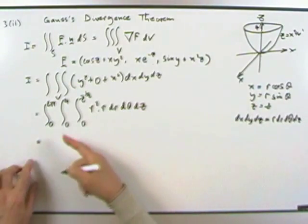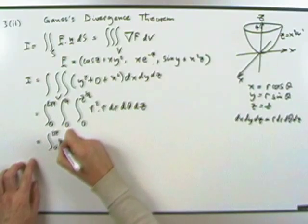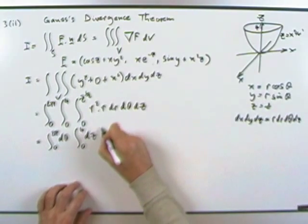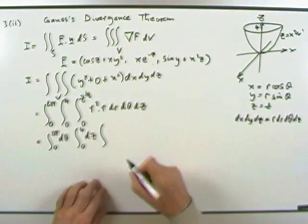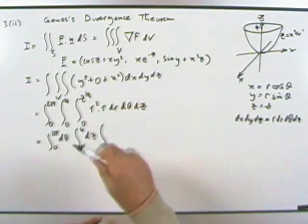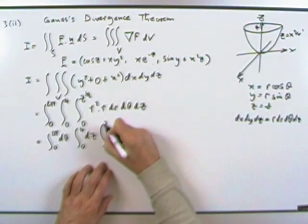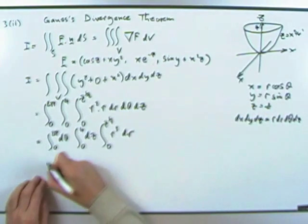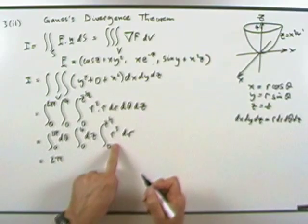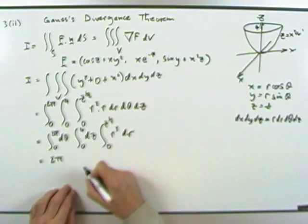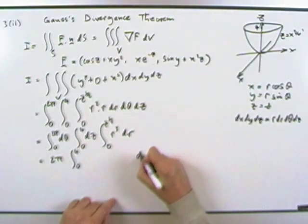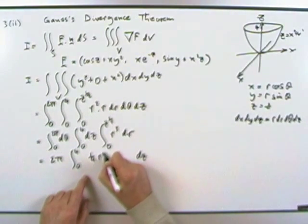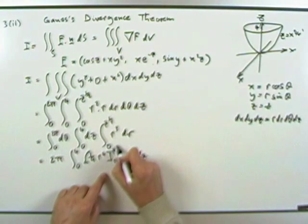I can split the θ part out: integral from 0 to 2π dθ is completely independent — that's a constant. For the r part, the integral from 0 to z^(1/2) of r³ dr gives one quarter of r⁴ evaluated from 0 to z^(1/2), which is one quarter of (z^(1/2))⁴ = z²/4.